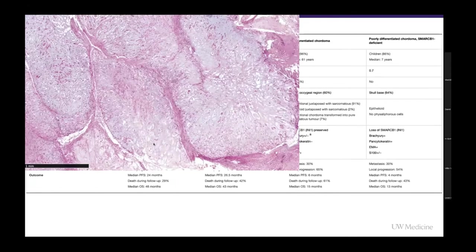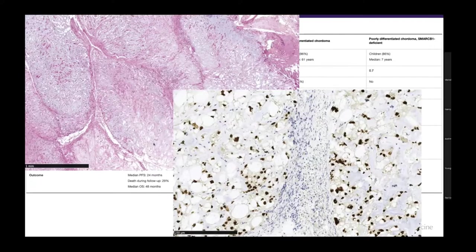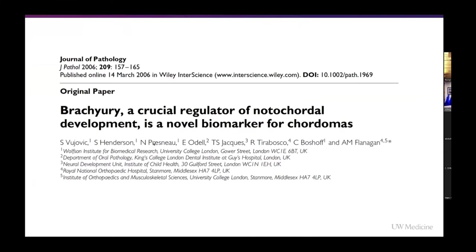Histologically, chordomas are more lobulated and have these characteristic physaliphorous cells — Greek for 'bubbly' — where they lose the cytoplasmic staining, but they have strong nuclear expression of brachyury. This mutation was initially discovered in mice that develop short tails, hence the term 'brachy.' Prior to our understanding of this transcription factor, it was difficult to differentiate the chondroid chordoma subtypes from chondrosarcomas, which have different clinical outcomes. Brachyury is essential for notochordial development as migratory cells leave the primitive streak and undergo epithelial-to-mesenchymal transformation.